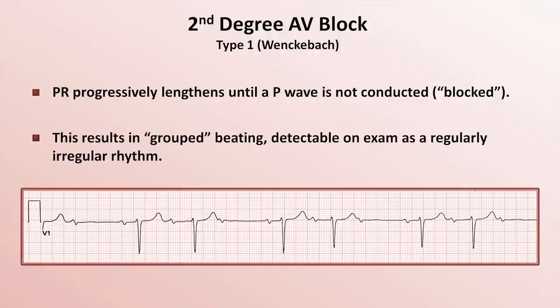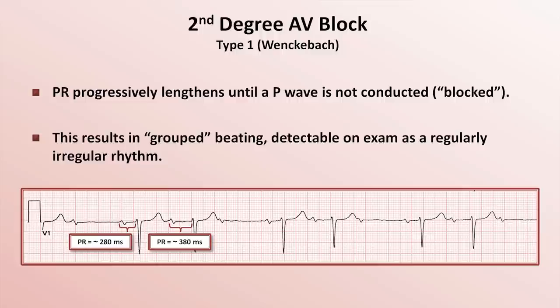Here's an example of type 1 block. The first thing you might notice is the repeating pattern of grouped beats. If you are feeling a patient's pulse or listening to the heart with a stethoscope, you would easily detect the patient's skipping beats. Next, look at the PR intervals. In the first complete cardiac cycle on the strip, the PR interval is about 280 milliseconds. For the next beat, it's about 380 milliseconds. And then we see a P wave that falls on the end of the T wave and is not subsequently followed by a QRS complex — this is a blocked P wave. In my experience, type 1 block is usually asymptomatic, but occasionally a patient may complain of palpitations or, very rarely, lightheadedness as a consequence of a resulting bradycardia.